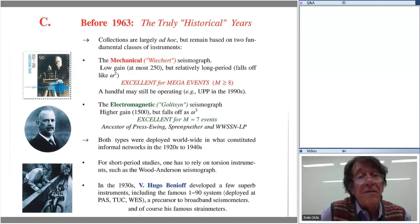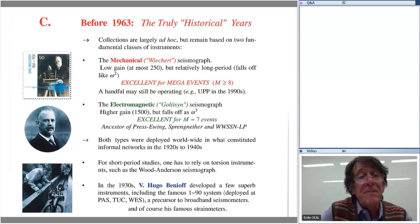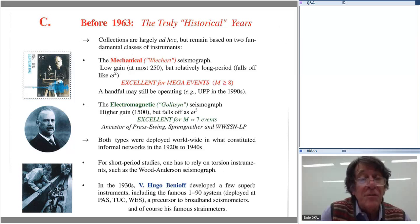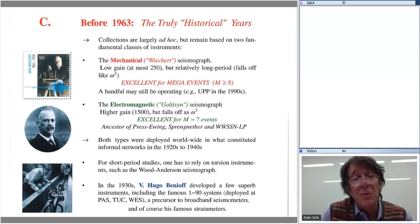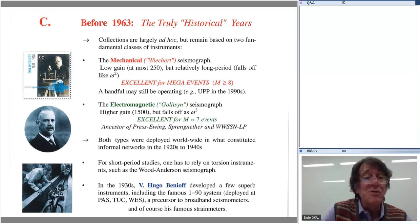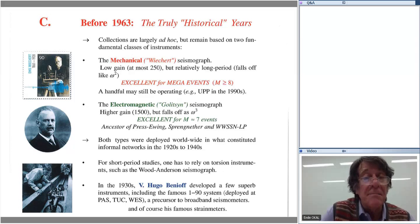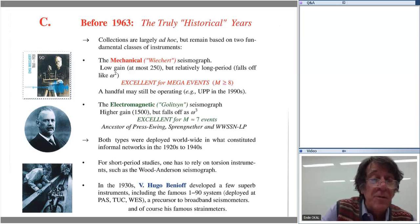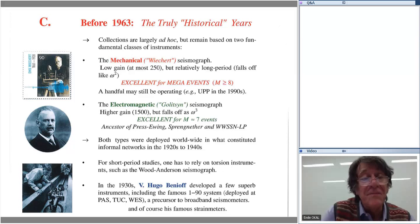Fundamentally, there were two types of instruments developed. The mechanical instrument was an entirely mechanical seismograph where amplification was obtained mechanically, limited to a gain of approximately 250. This was developed primarily by Emil Wiechert, who became so famous that he was given a stamp recently by the German post office. These constitute absolutely wonderful records to study mega-events of magnitudes greater than about eight. These instruments were so reliable that a handful of them are still operating; the last one I saw was in the 1990s in Uppsala, and some have been restored to their original function.